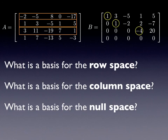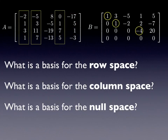Now, what is a basis for the column space? We look at the first, second, and third rows that have leading ones in B, and see what columns they point to — the first, the second, and the fourth. So in matrix A, the yellow rectangles point to the basis vectors for the column space: namely the first, second, and fourth columns of A. Unlike the row space case, it is not true that the first, second, and fourth rows of B form a basis for the column space of A.